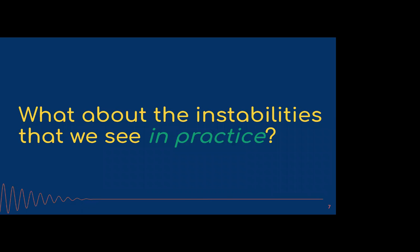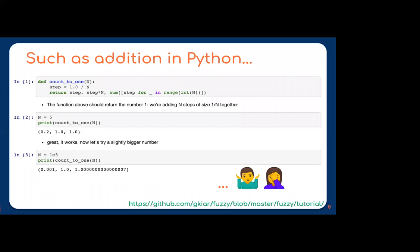We can look for operating system effects, data quality issues, or algorithmic choices, but what about the instabilities we see in practice that we didn't expect? For instance, simple addition in Python reveals a problem. If I make a function that counts to one — taking a number N, making a step size of 1/N, and adding that N times — for N=5 it works fine, but for N=1000, the step size and multiplication are correct, yet the addition gives the wrong answer.